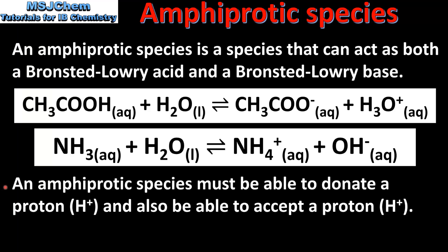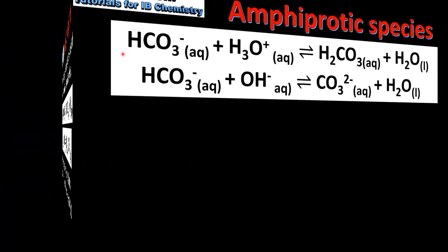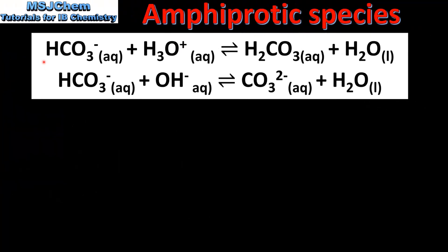An amphiprotic species must be able to donate a proton and also be able to accept a proton, therefore it can act as both a Bronsted-Lowry acid and a Bronsted-Lowry base. Next we look at more examples of amphiprotic species, with the first example being HCO3-, which is the hydrogen carbonate ion.